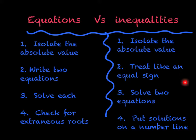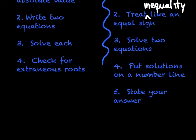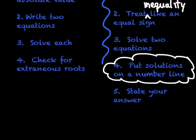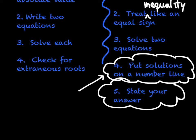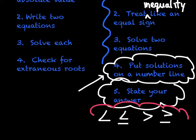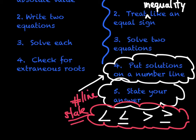The inequalities process is very similar. Step one: isolate the absolute value, same as before. Here's the different part — treat the inequality like an equal sign. Step two: solve two equations. Step three — here's where it's different — put the solutions on a number line. Step four: state your answer. Inequalities include less than, less than or equal to, greater than, or greater than or equal to. Anytime you see one of these, you have to use a number line and state your answer.